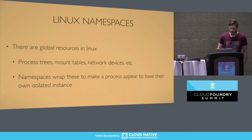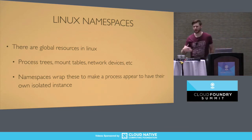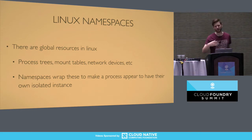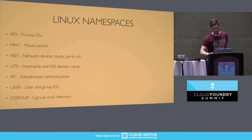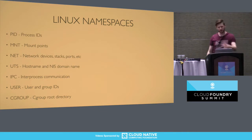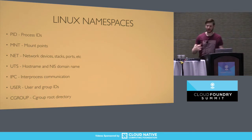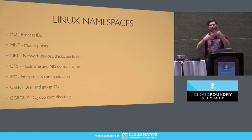So for confinement, we've got Linux namespaces. There are a set of global resources in Linux — things like network devices, mount points — and namespaces allow you to wrap these resources such that processes appear to have their own isolated set of those resources. These are the seven namespaces available in Linux right now. I'm going to call out the user namespace specifically, because it's going to become really important later when we talk about doing stuff unprivileged. User namespaces allow you to act as an unprivileged user in one namespace, and in a child user namespace, act as a privileged user.